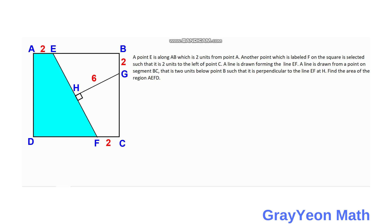We have square ABCD. Point E is along AB, which is two units from point A. Another point labeled F on the square is selected such that it is two units to the left of point C. A line is drawn forming the line EF. A line is drawn from a point on segment BC that is two units below point B such that it is perpendicular to the line EF at H. Find the area of the region AEFD.